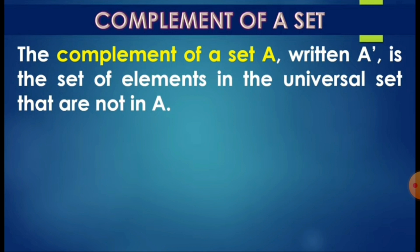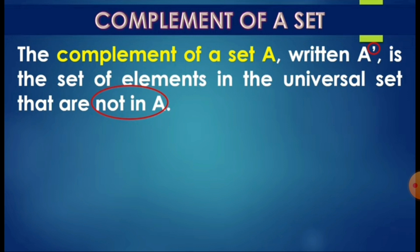Another set operation: the complement of a set. The complement of set A is written with an apostrophe above the A. It is the set of elements in the universal set that are not in A. So when we say complement of set A, we are looking for elements present in the universal set but not in set A. We need the universal set for this.